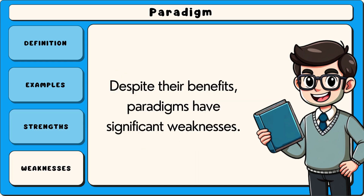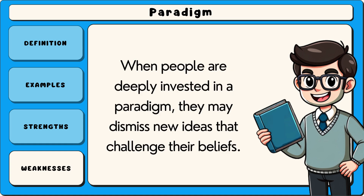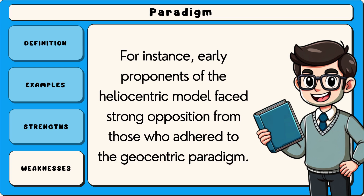Despite their benefits, paradigms have significant weaknesses. One major limitation is that they can become rigid and resistant to change. When people are deeply invested in a paradigm, they may dismiss new ideas that challenge their beliefs. This resistance can slow progress and prevent the adoption of more accurate or effective models. For instance, early proponents of the heliocentric model faced strong opposition from those who adhered to the geocentric paradigm.